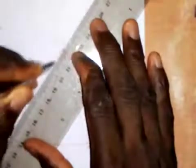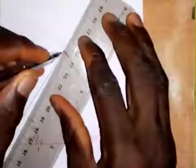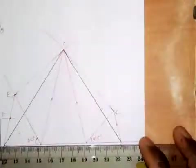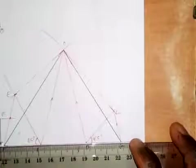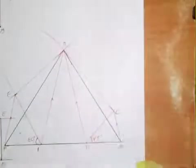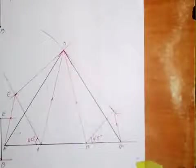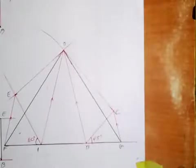I will join point D and F together with a straight line, and join point D and G together. I will also make line FG a thick line. Triangle DFG is the required triangle that is equal in area to the irregular polygon ABCDE. All you need to do is practice and you will surely master it. Thank you and God bless you.